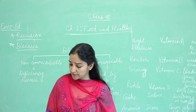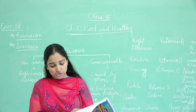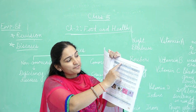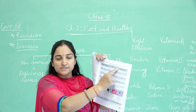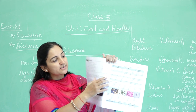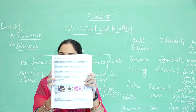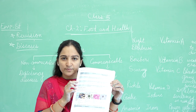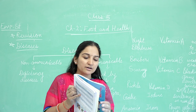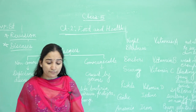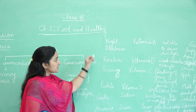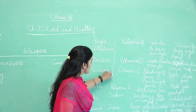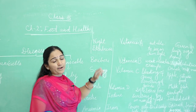In your book on page number 21, a table of deficiency diseases is given. You can see it in your book, read it well and learn it well. Here I will draw it roughly for you. The first deficiency disease name is night blindness.